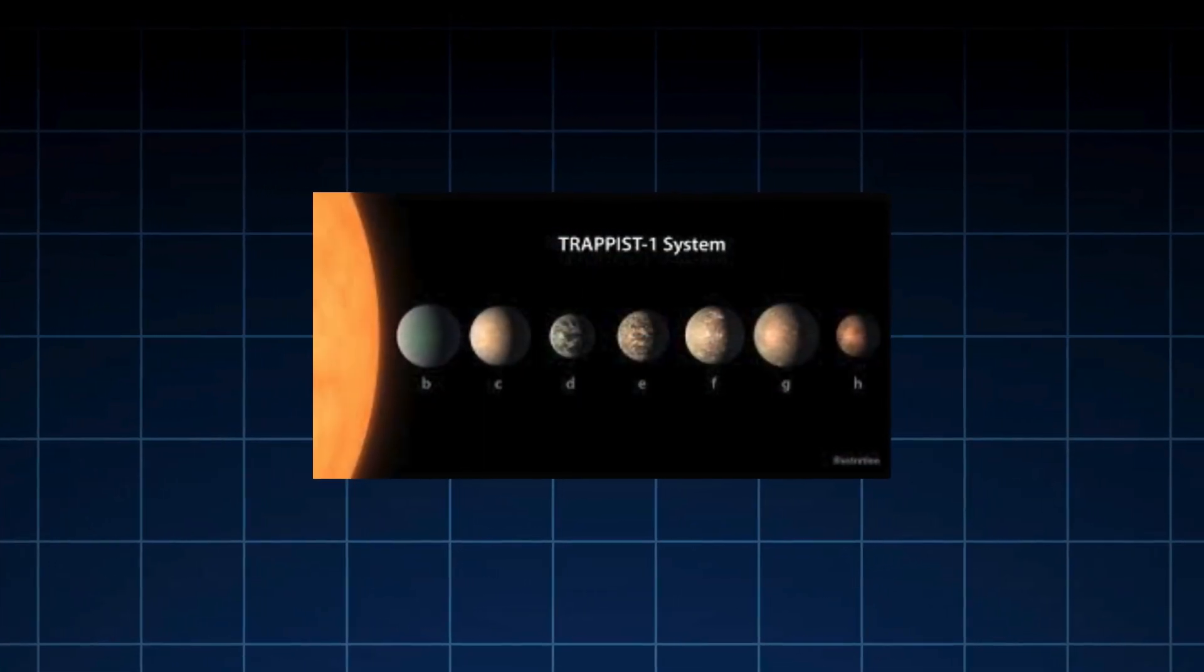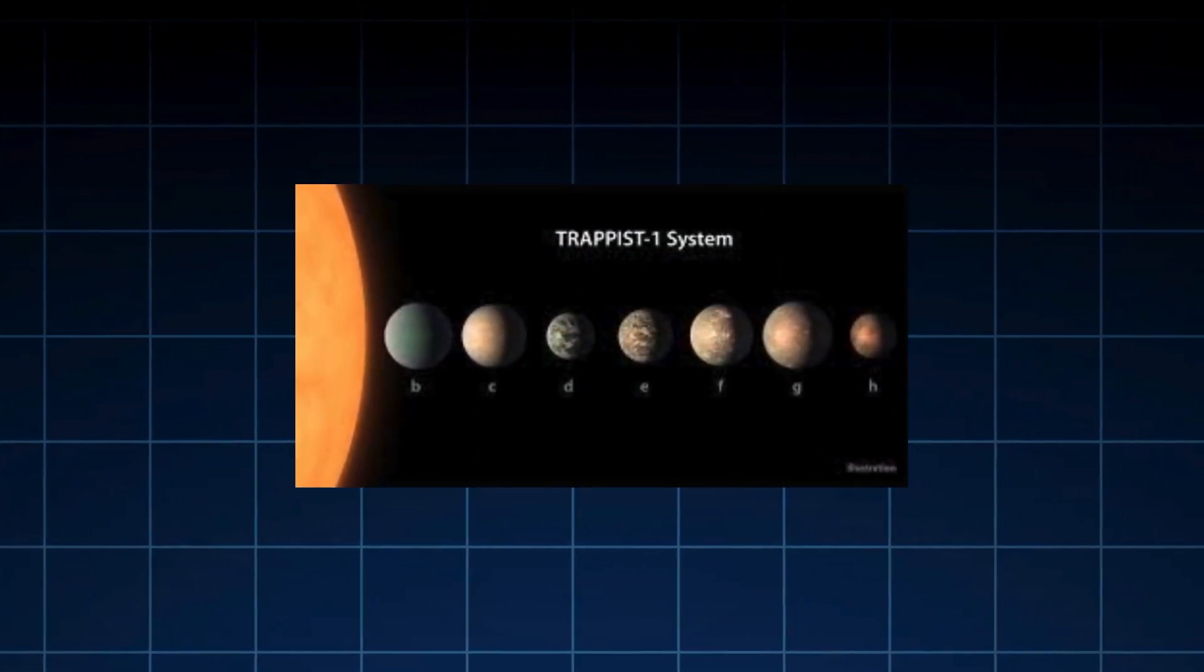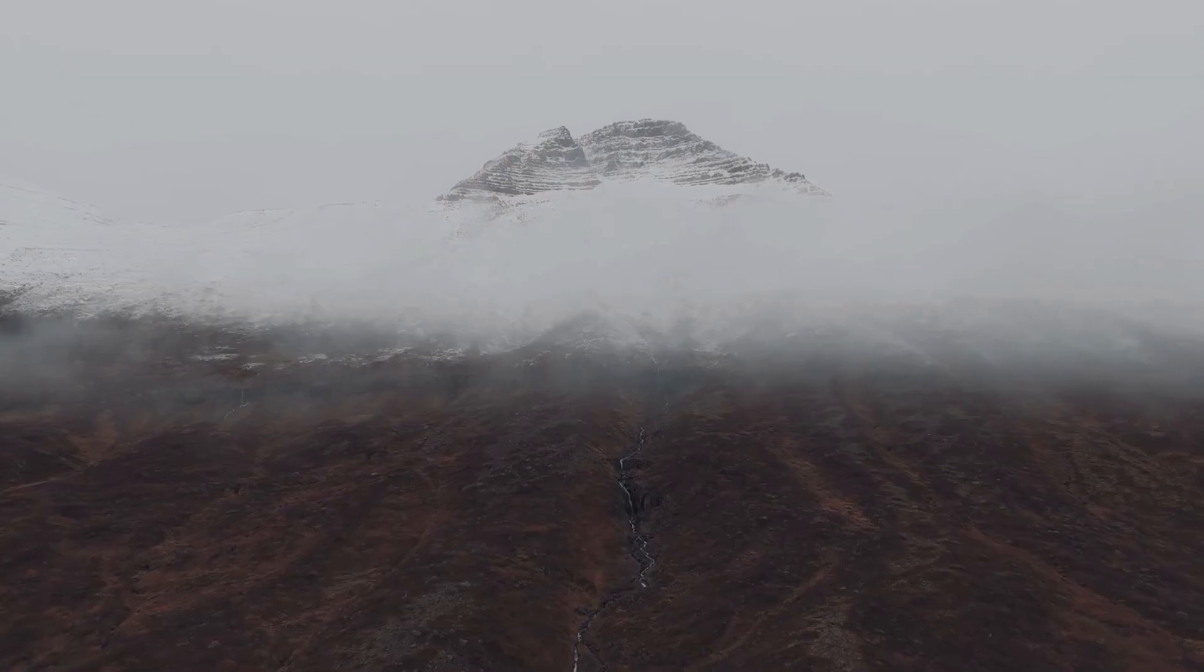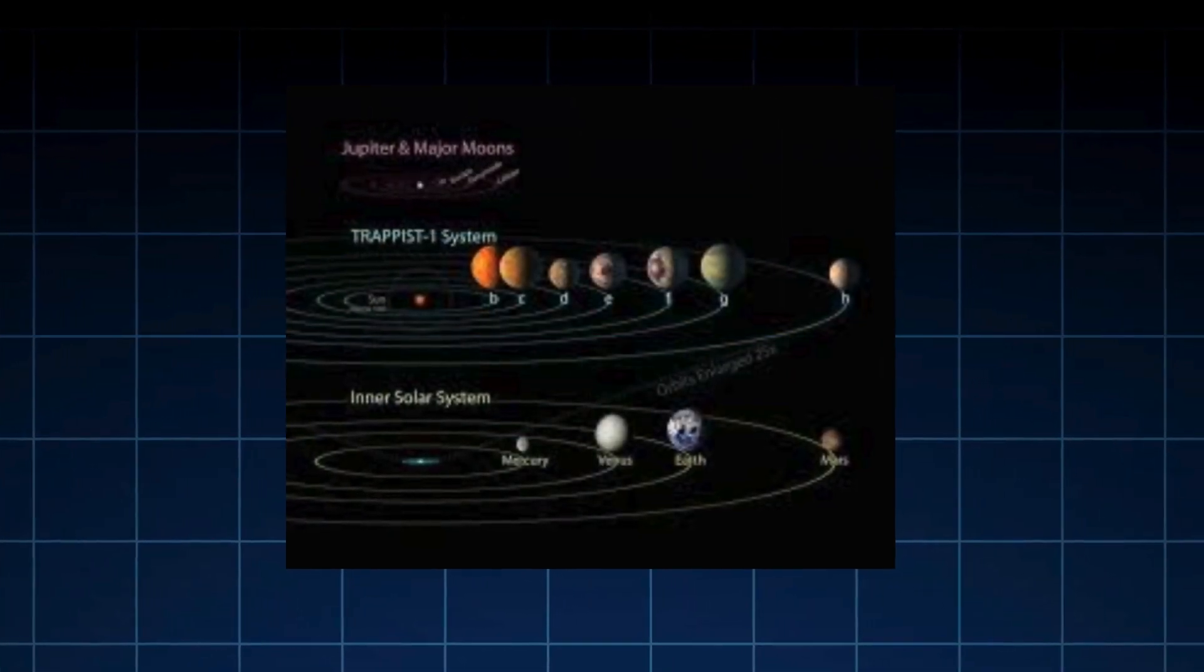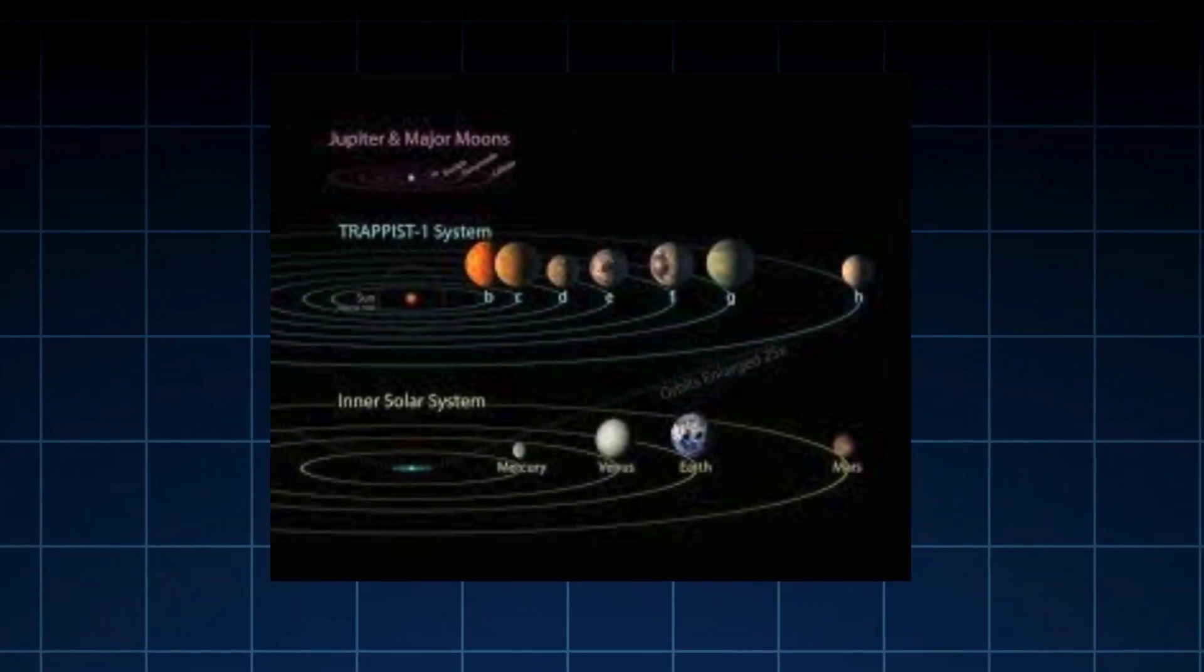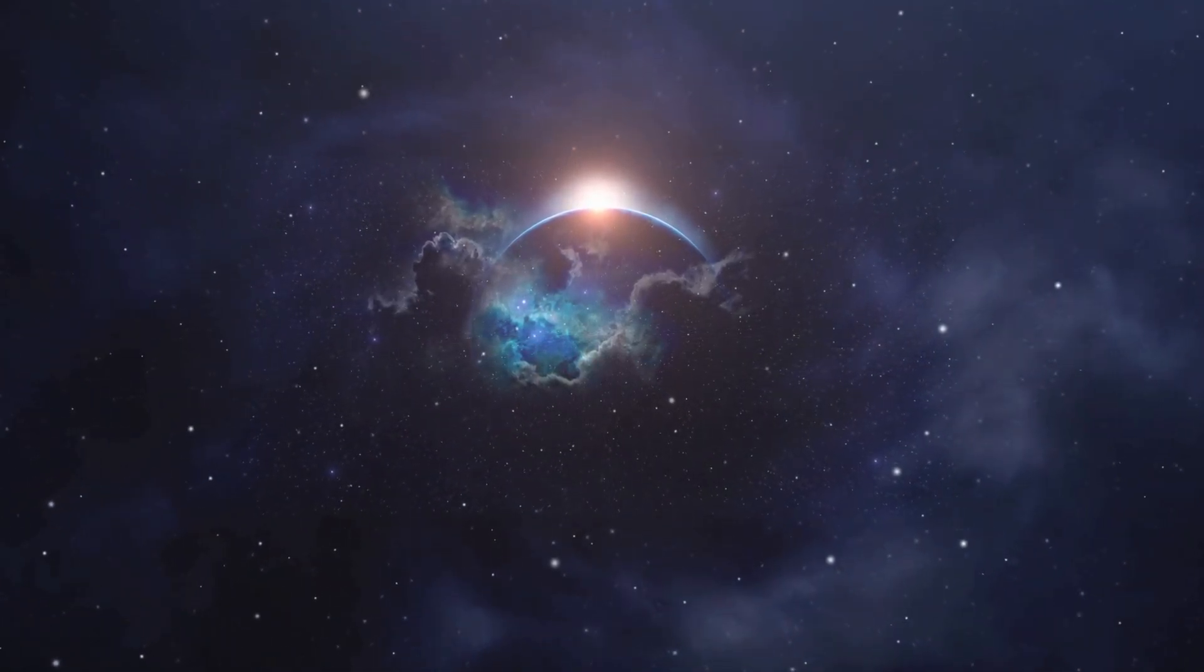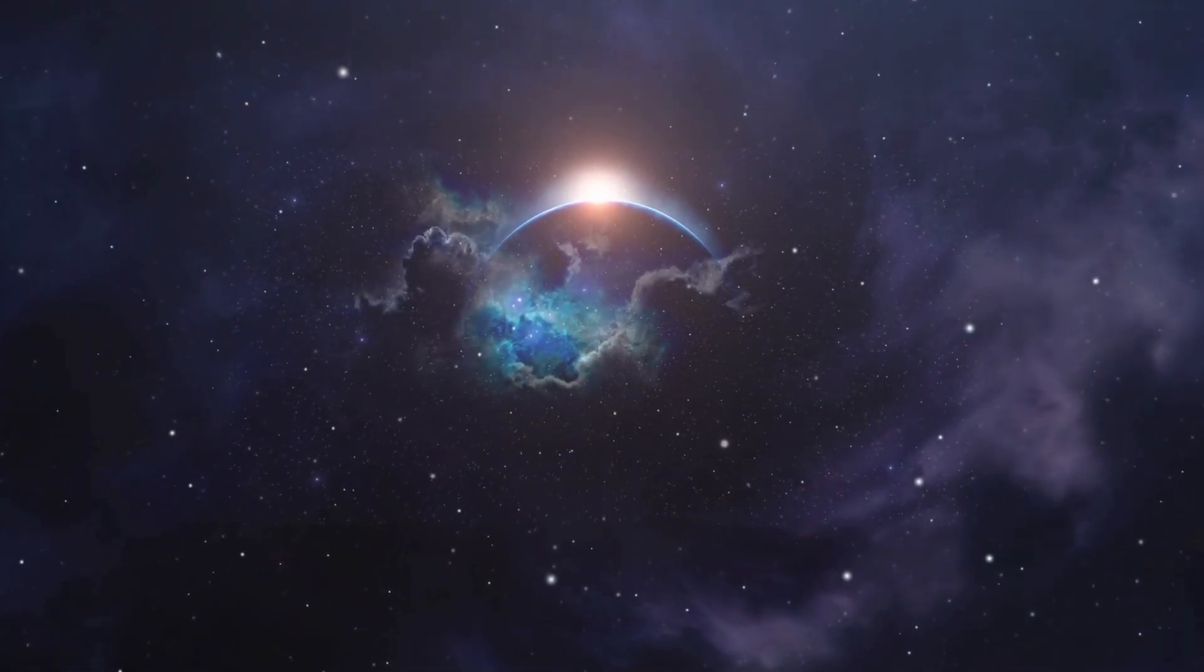TRAPPIST-1. It's cold, ancient, and barely visible, and yet it hosts something extraordinary: not one but seven Earth-sized planets. It's as if nature itself set up an experiment. Can life exist around a star like this?